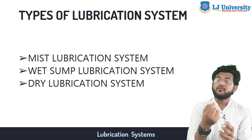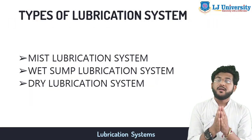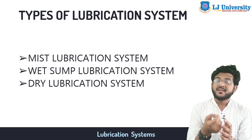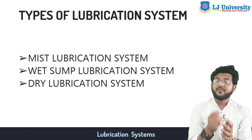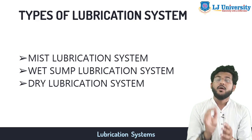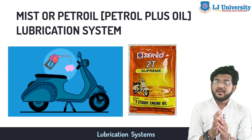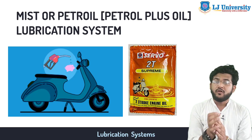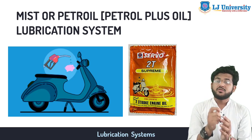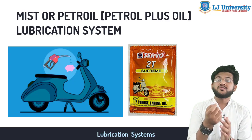Now let us move to the types of lubrication systems. There are basically three types: mist lubrication system, wet sump lubrication system, and dry sump lubrication system. Let us see all of them one by one. First is the mist or petrol lubrication system. The mist lubrication system is used in two-stroke vehicles or two-stroke cycle engines.